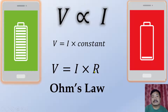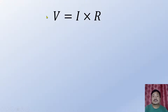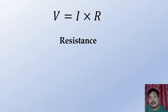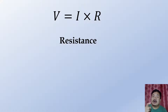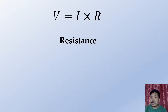Now, what is R? R is our resistance. The meaning of resistance is 'to block' or 'to stop.' So resistance is the property of a material which tries to stop the flow of current in the conductor.